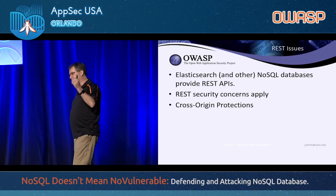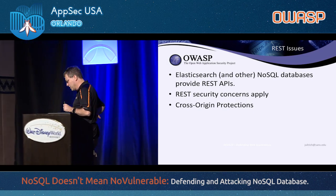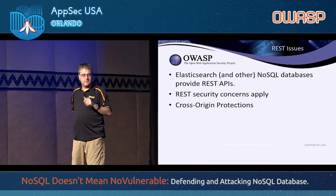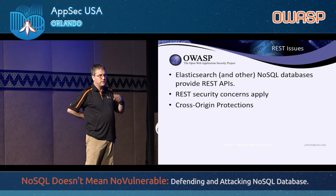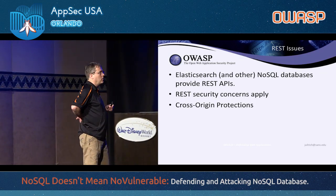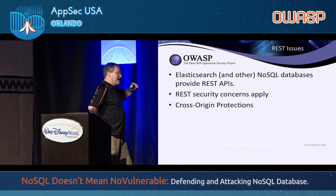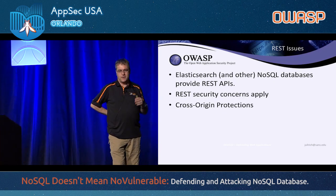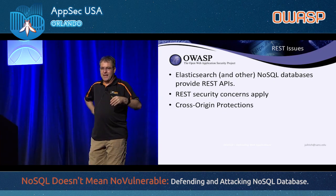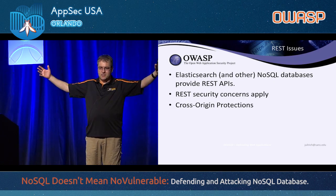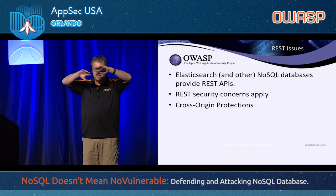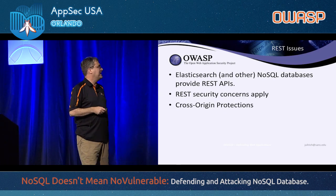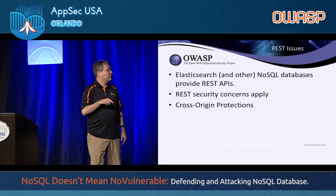This was specifically with MongoDB. For Elasticsearch, I can imagine very similar scenarios — the query language is a little different, Elasticsearch uses Lucene, but again you're passing JSON objects that are parsed by the database.